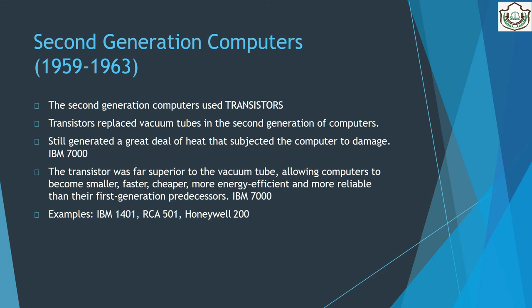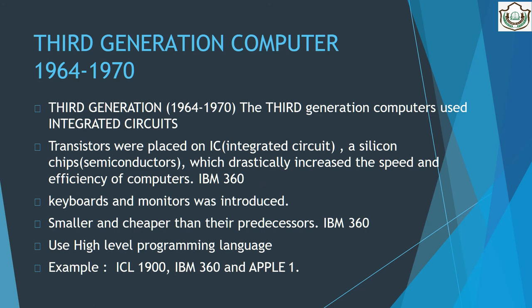Second generation computers used transistors. Transistors replaced vacuum tubes in the second generation of computers, but still generated a great deal of heat that subjected the computer to damage. Third generation computers used integrated circuits — ICs. Transistors were placed on silicon chips, which drastically increased the speed and efficiency of computers.